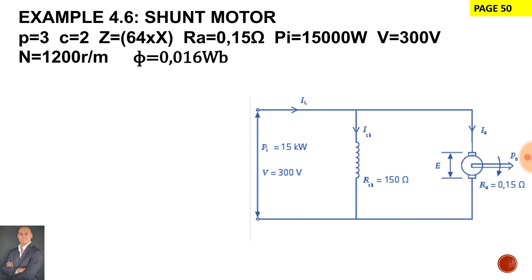Now the first part of this question we need to calculate armature current. Now to calculate armature current for a motor it's going to be always minus. Therefore IA is equal to IL minus I shunt. Now to calculate the supply current we will say power divided by voltage and to calculate the shunt current it's going to be V over R shunt.